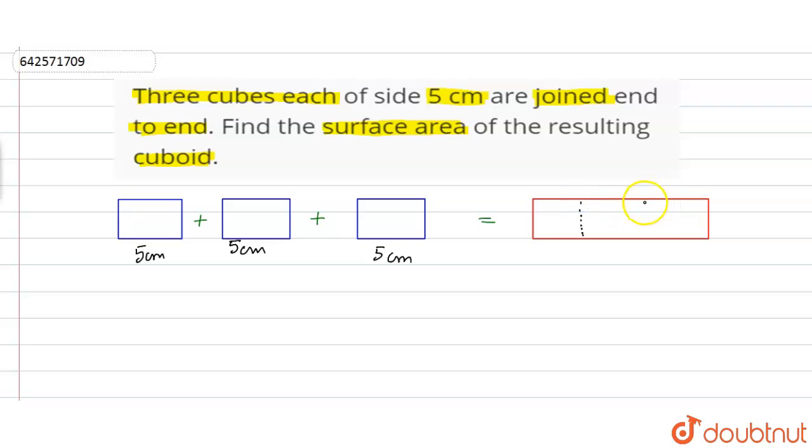We can say the partition like this: this is 5 cm, this is 5 cm and this is 5 cm. The length of new cuboid will be L, equal to 5 plus 5 plus 5, that is 15 cm, and their height will not change.